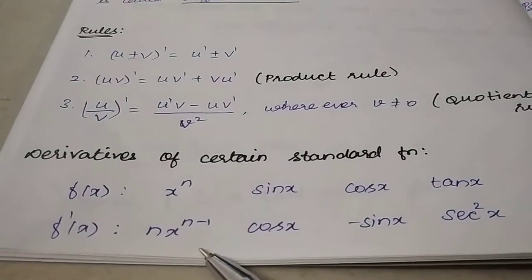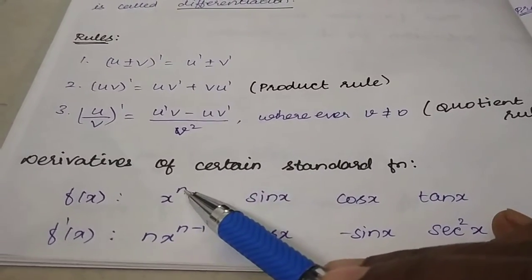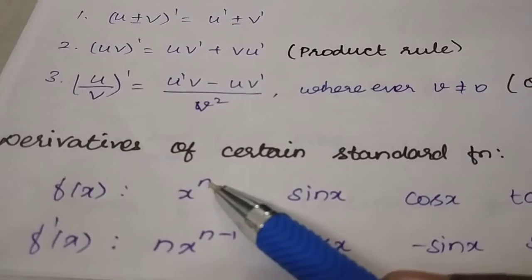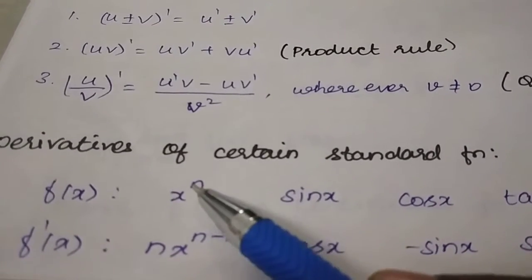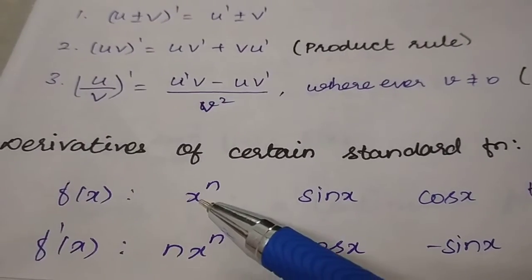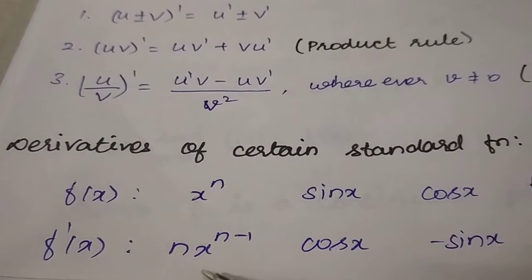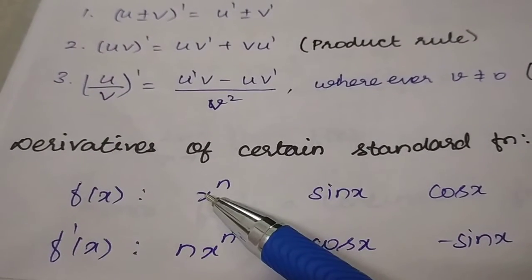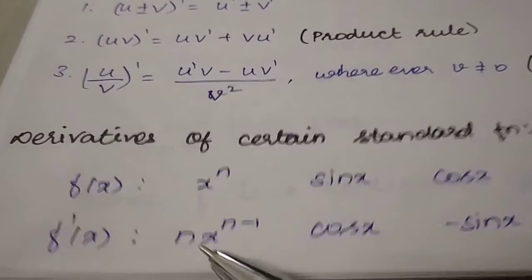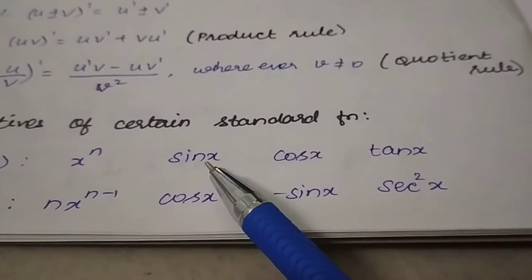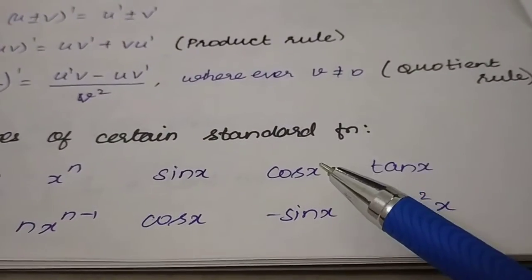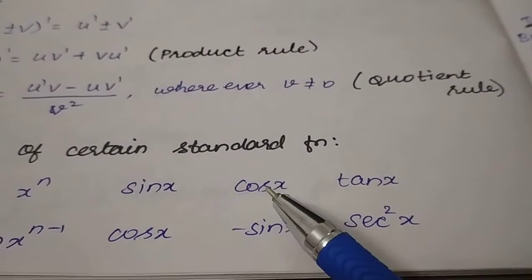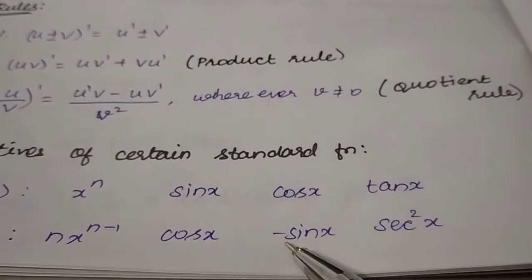Here are derivatives of certain standard functions. The derivative of x^n is n·x^(n−1) — bring the power n to the front and subtract 1 from the exponent. For example, the derivative of x^5 is 5x^4, and the derivative of x^20 is 20x^19. The derivative of tan x is sec²x, and for cos x there is a negative sign involved.